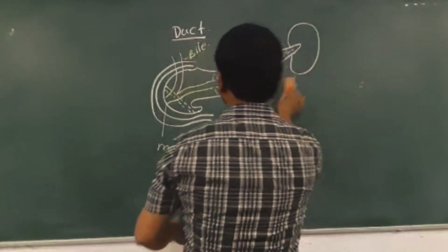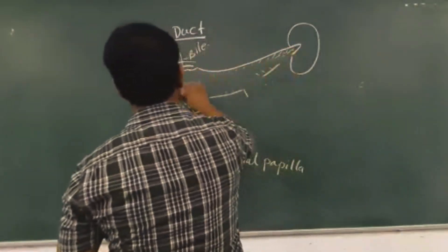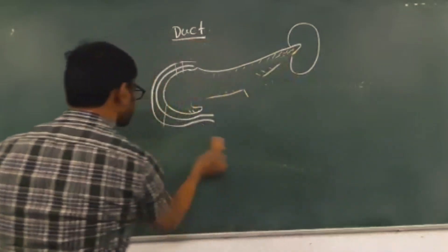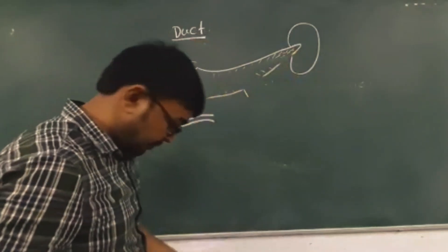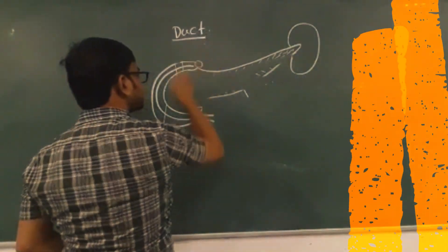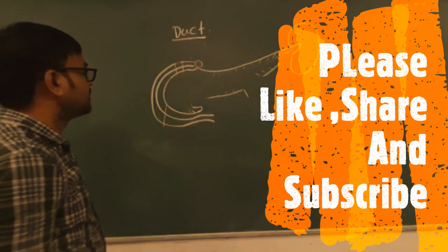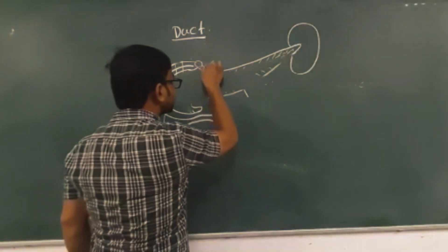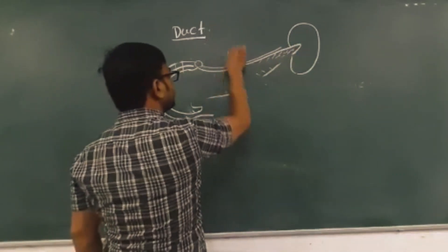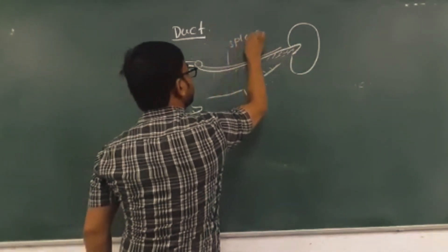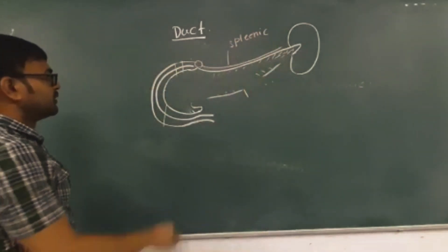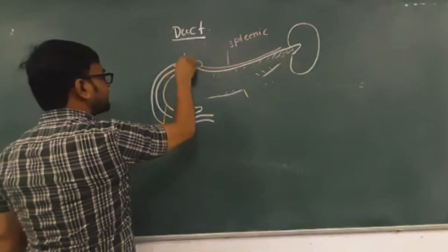Now the arterial supply of the pancreas. The pancreas is supplied by branches from the celiac trunk. On the left side, the celiac trunk gives the splenic artery. On the right side, it gives the common hepatic artery.